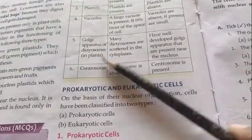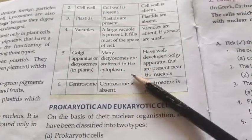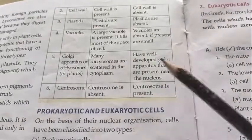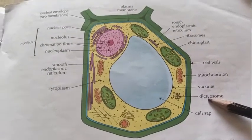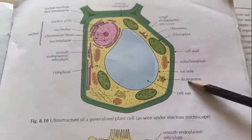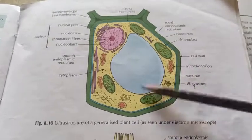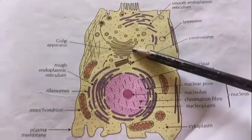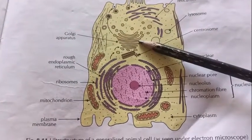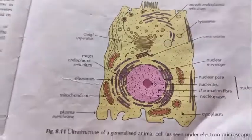Next we will discuss the Golgi apparatus. In the plant cell, the Golgi apparatus is referred to as dictyosomes — many dictyosomes are scattered in the cytoplasm. In the animal cell, there is a well-developed Golgi apparatus present near the nucleus. You can see in the plant cell image that the dictyosomes are scattered here and there, while in the animal cell the Golgi body is very distinct and positioned near the nucleus.